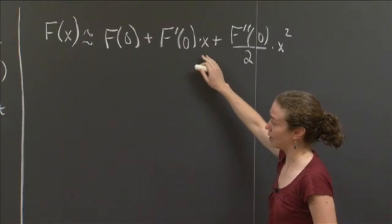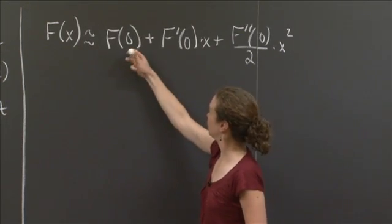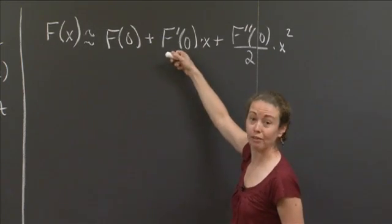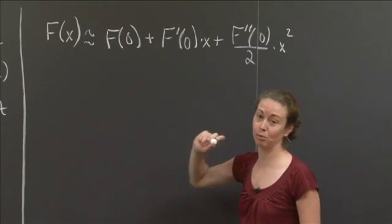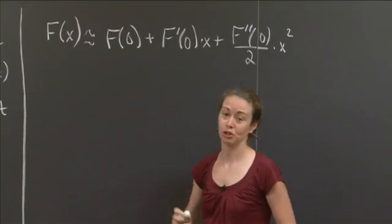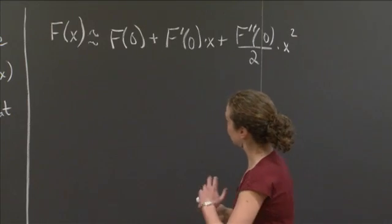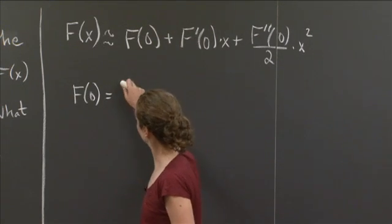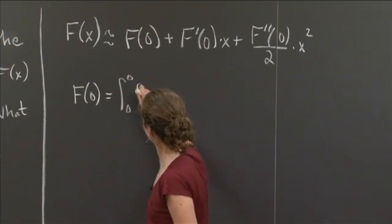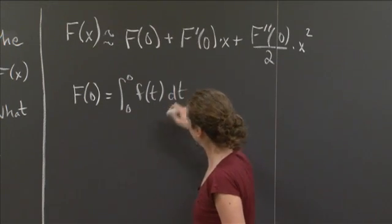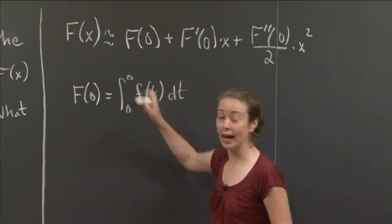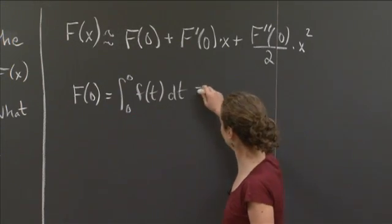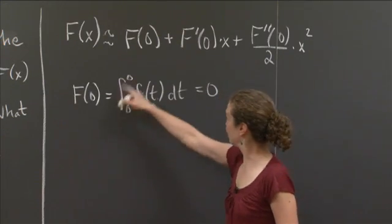Now all we need to do is write it in terms of little f. So we need to figure out what each of these things actually is — what capital F of 0 is, what capital F prime of 0 is, and what capital F double prime of 0 is in terms of the function little f. First, let's figure out what capital F of 0 is. It's the integral from 0 to 0 of f of t dt. We know when you take the integral from a to a of a function, you get 0. So capital F at 0 is just 0.